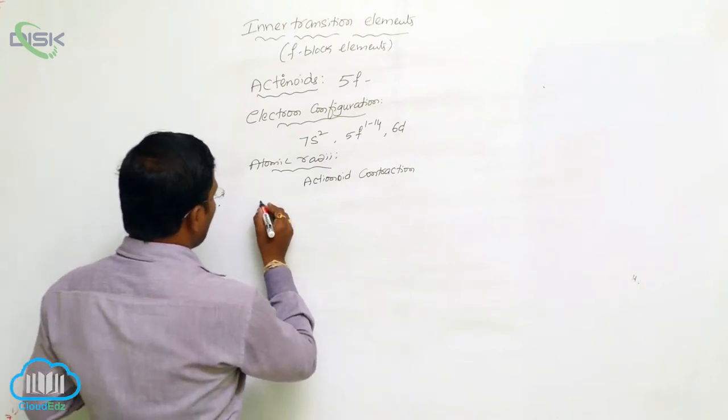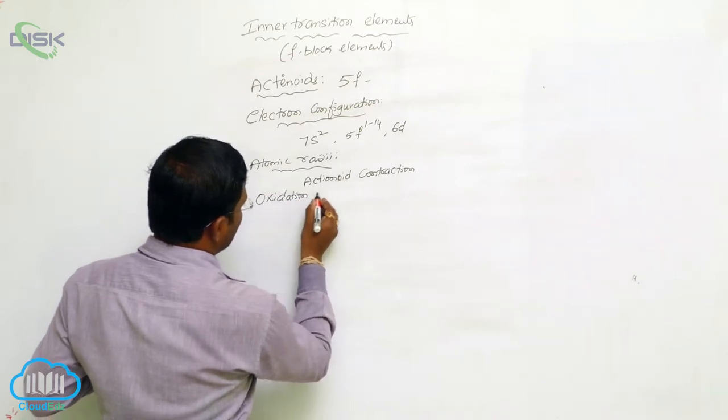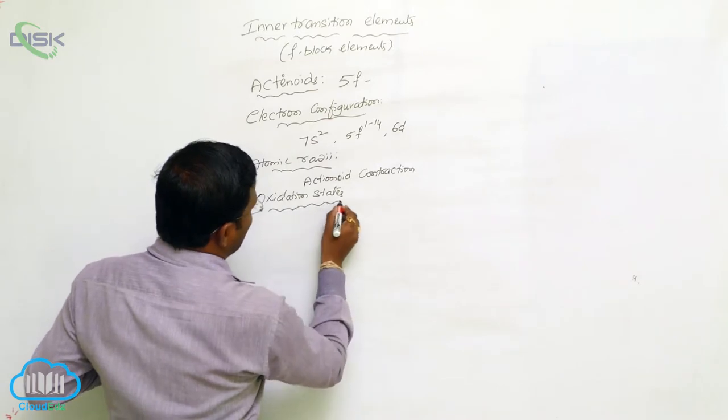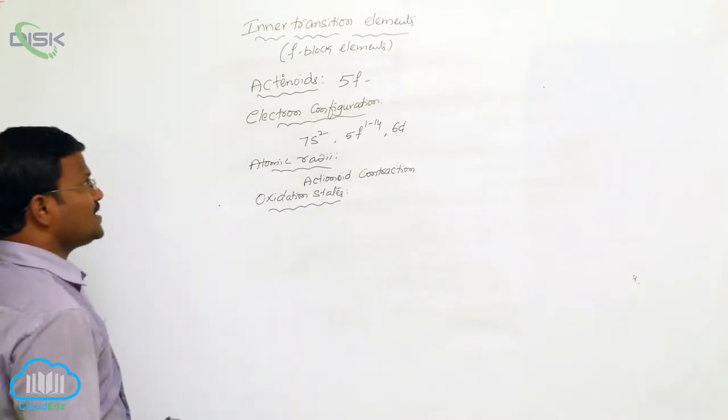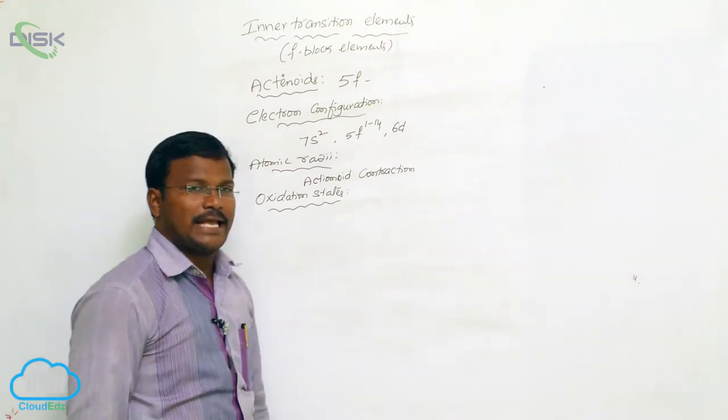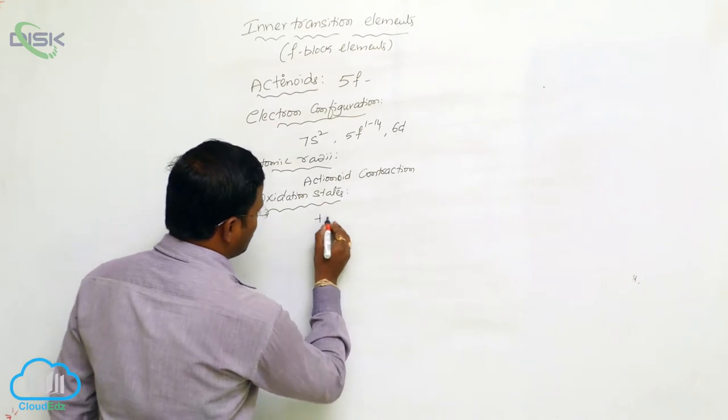Next, oxidation states. Not like lanthanides, these 5F series of inner transition elements can exhibit different types of oxidation states. They start with +2,